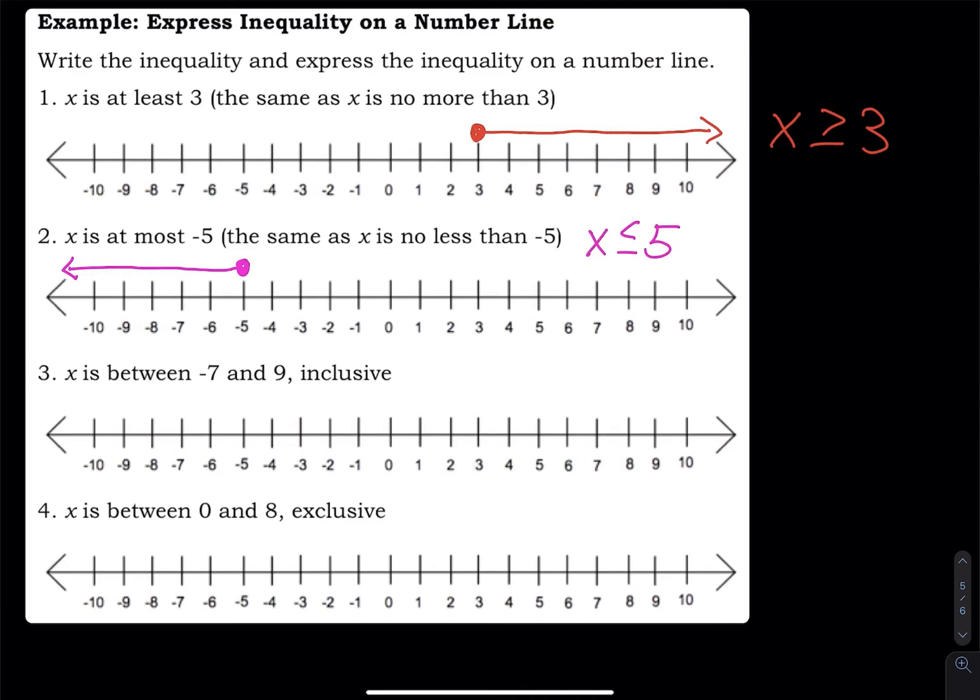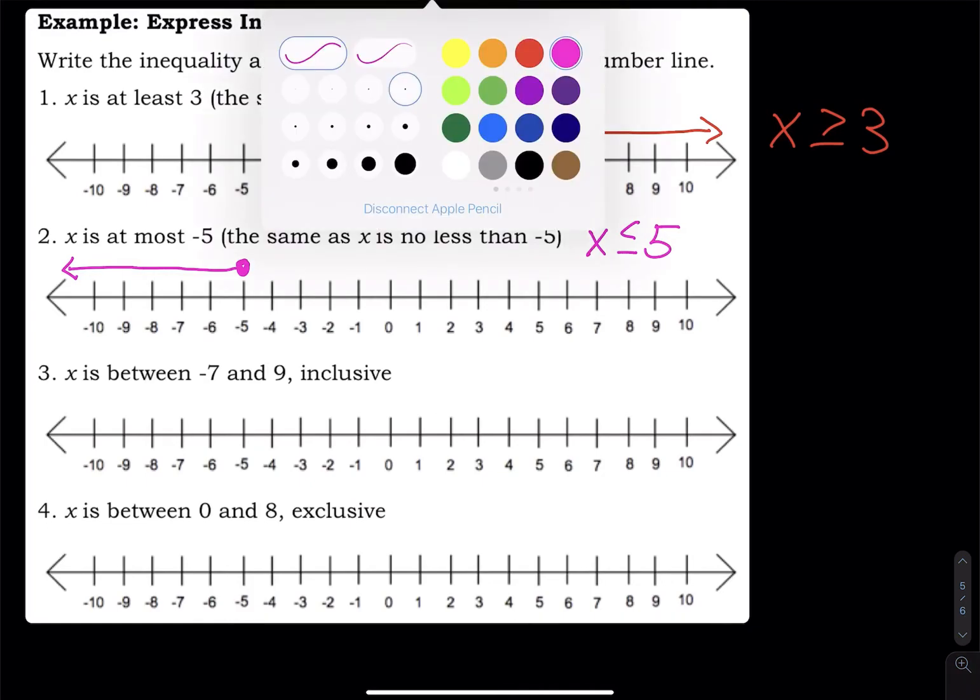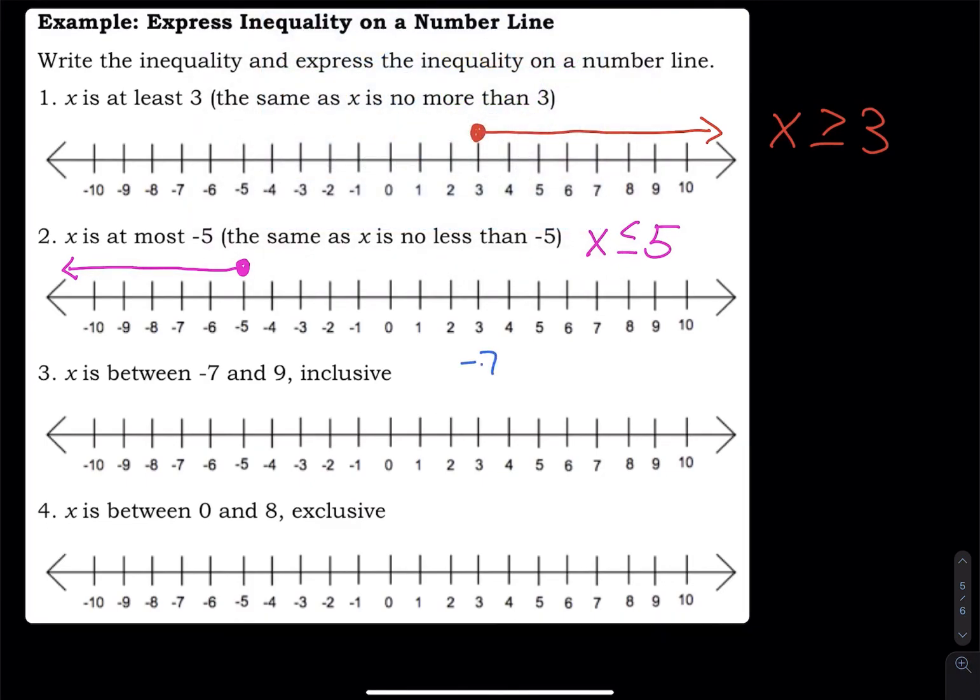Between negative 7 and 9 inclusive. Between negative 7 and 9 inclusive. This is negative 7, this is 9, including both. So we have this right here. So that is between, a between inequality.